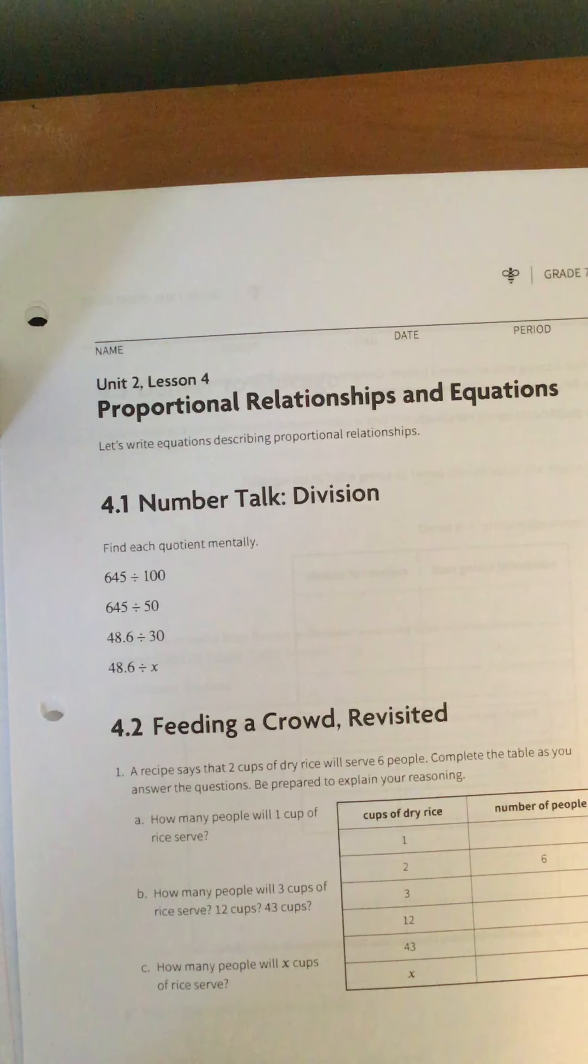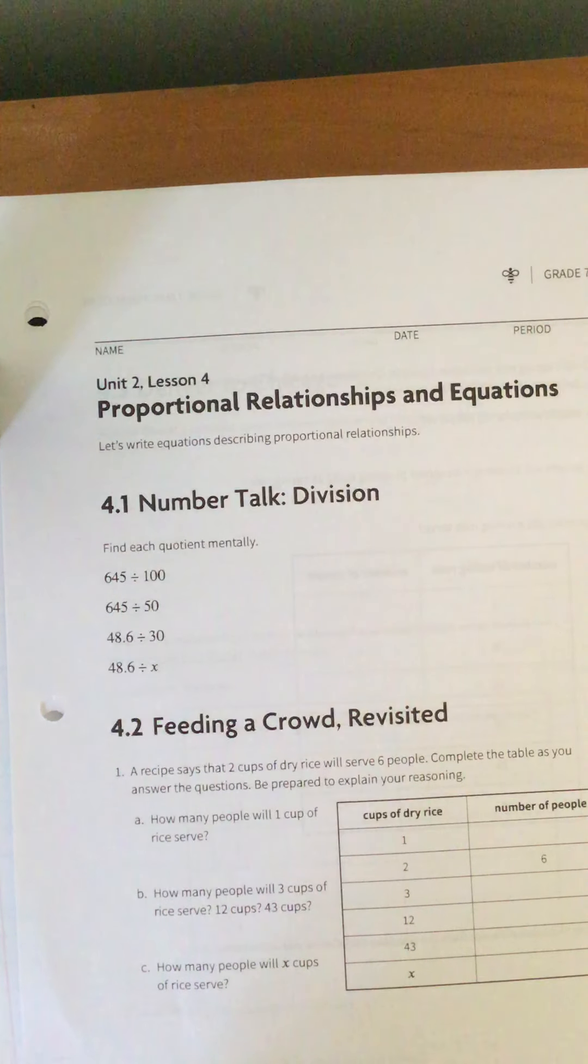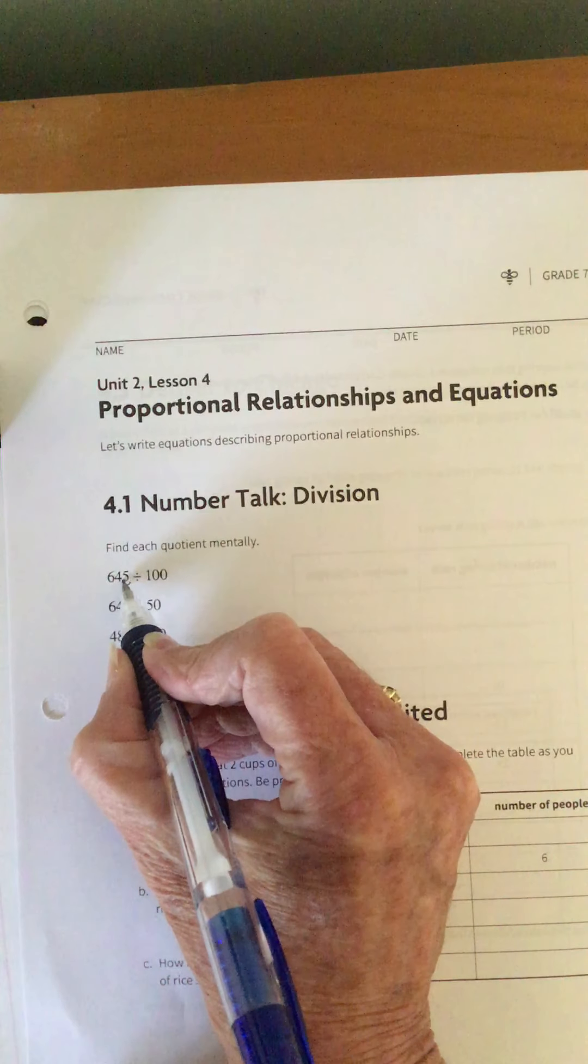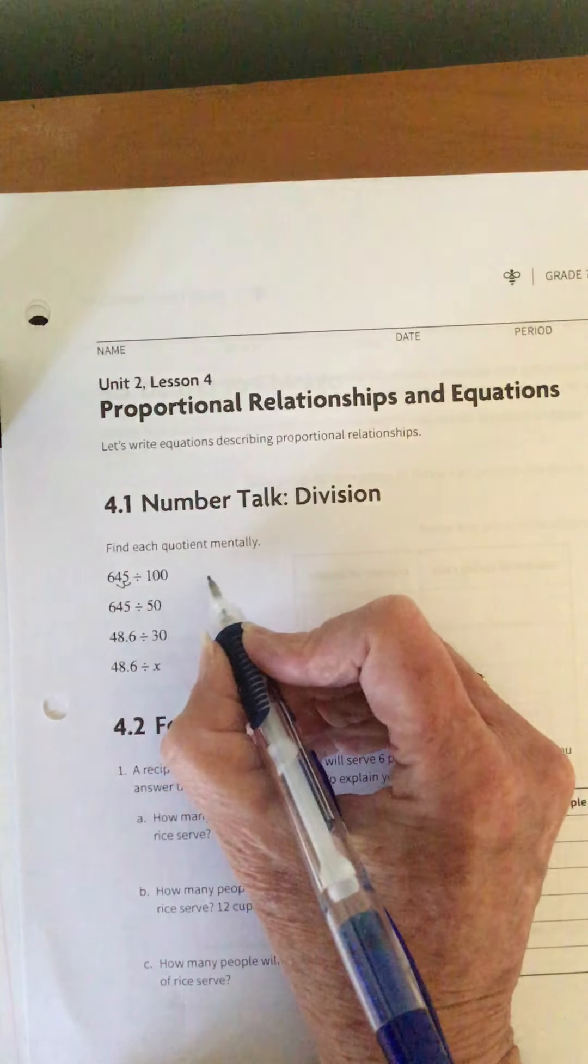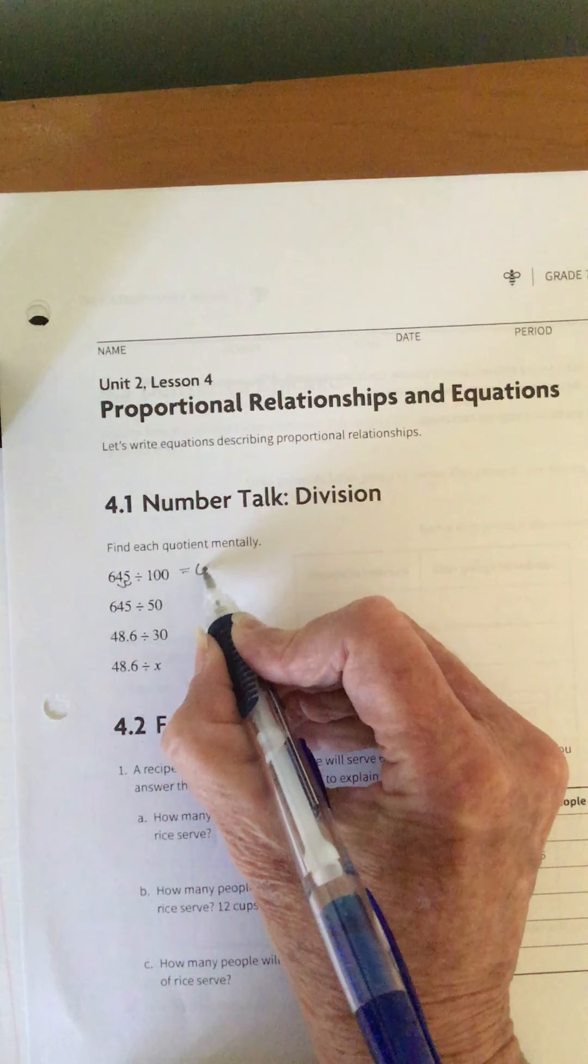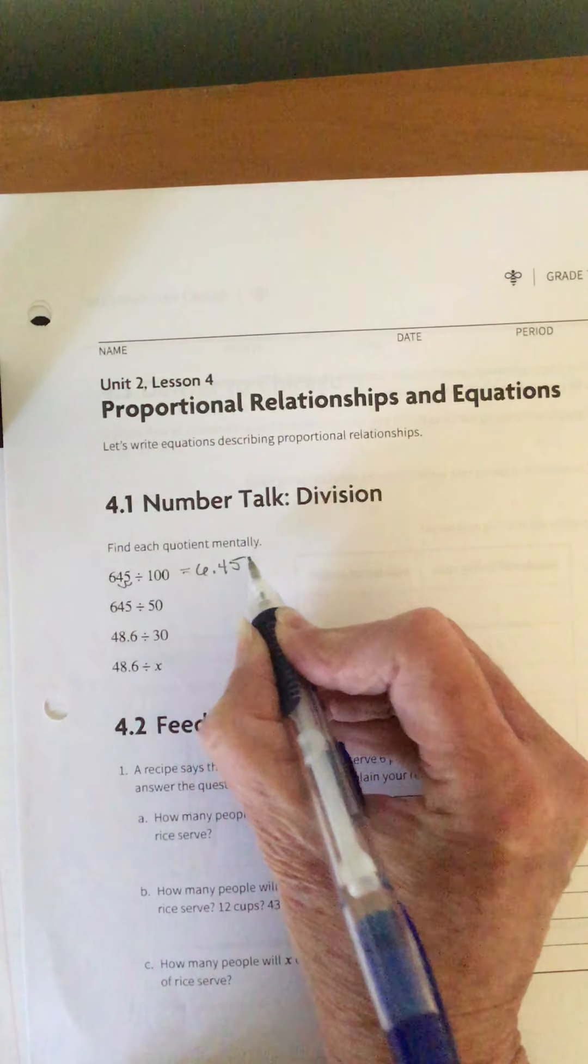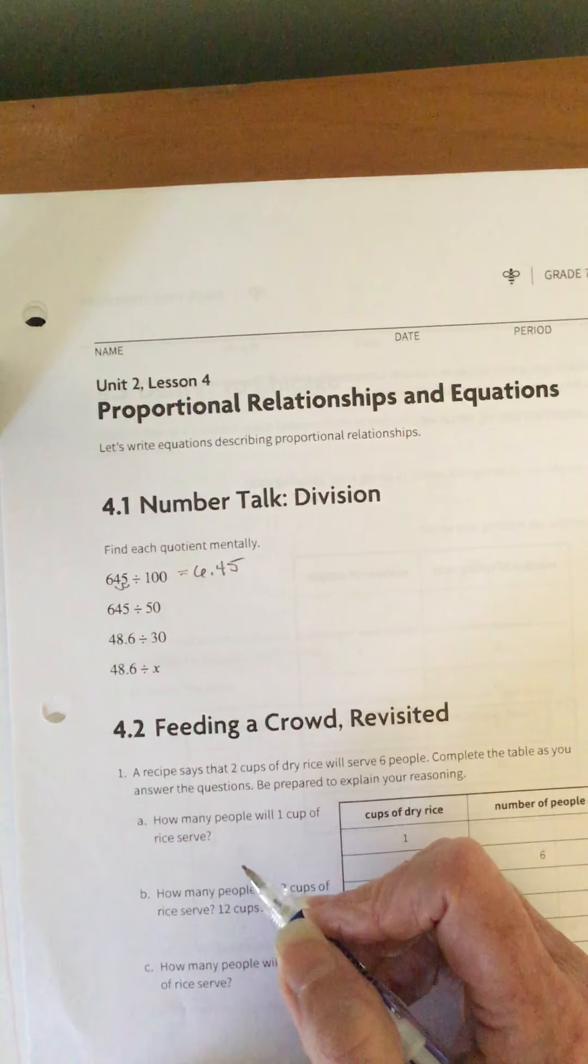We're starting out with a number talk on division, and they're asking us to find each quotient. Remember, a quotient is the answer in a division problem mentally. So 645 divided by 100. When you divide by 10, you move the decimal place over one place. When you divide by 100, you move it over two places. So I would say that the answer is 6 and 45 hundredths, or 6.45.